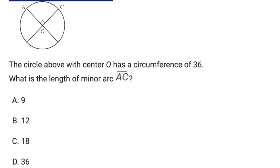Let's start with an easy question here. And again, pause the video, try it on your own first, but let's take a look. It says the above circle has a circumference of 36. So 36 is the circumference, the entire thing all the way around. What is the length of minor arc AC?